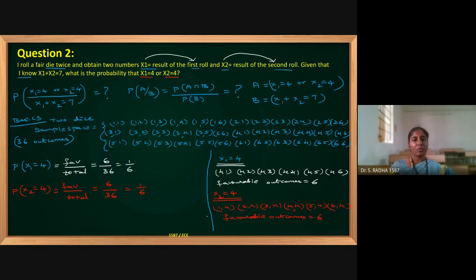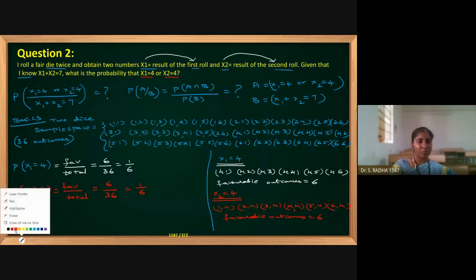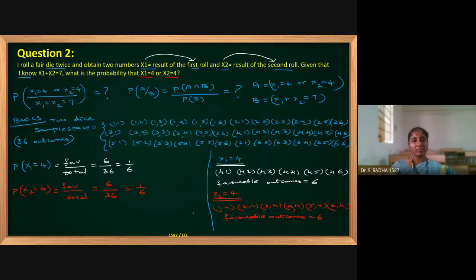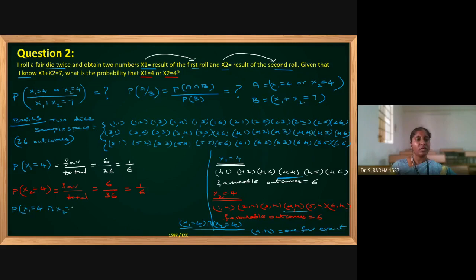Now we find the intersection: probability of x1 equals 4 AND x2 equals 4. This means 4 must come both times, so only the outcome (4,4) satisfies this. There is just one favorable event, so the probability of x1=4 intersect x2=4 is 1/36.